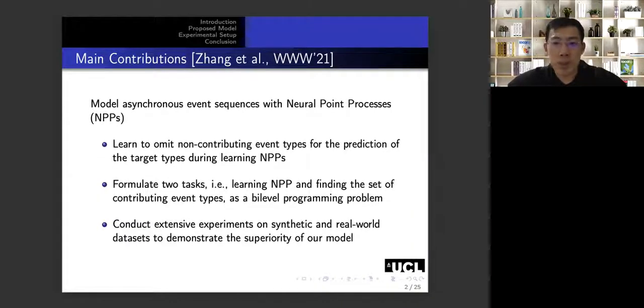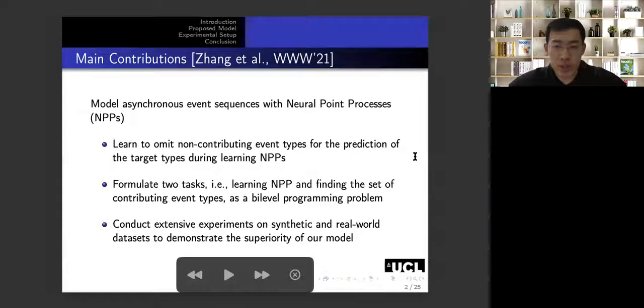We make three contributions in this paper. First of all, we learn to omit non-contributing event types for the prediction of target types when we learn neural point processes. Second, we simultaneously consider two tasks: one is learning neural point process, and the other is finding the set of contributing event types. We solve these two tasks at the same time by a bi-level programming technique. Third, we conducted extensive experiments to show that our model is advantageous on synthetic datasets and real-world datasets.